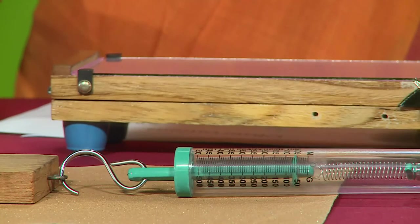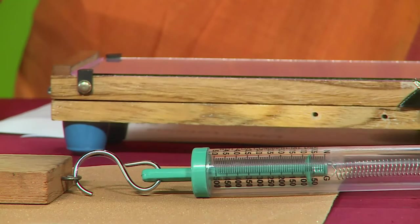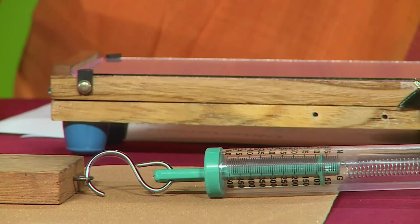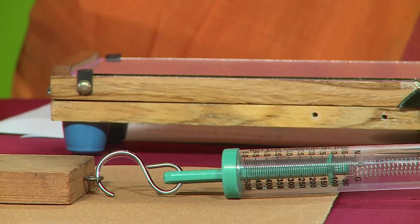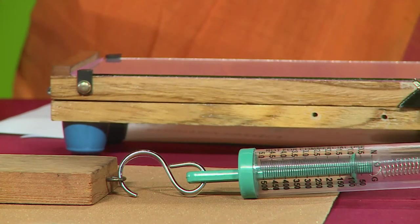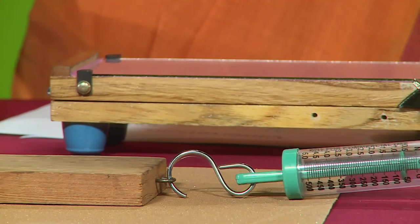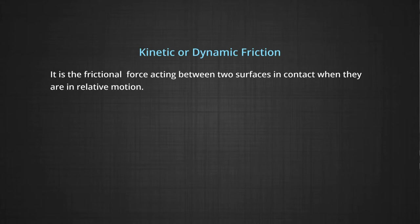If you notice, the same block when placed on top of a rough surface would require more force. That means the limiting value of friction has changed. So the force of friction can change its value, and this value is important to us. Kinetic or dynamic friction is the frictional force acting between two solid surfaces in contact when they are actually in relative motion.